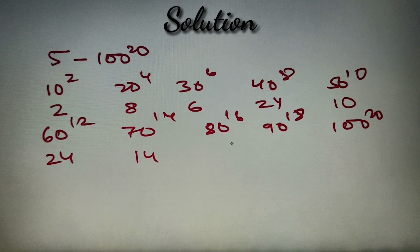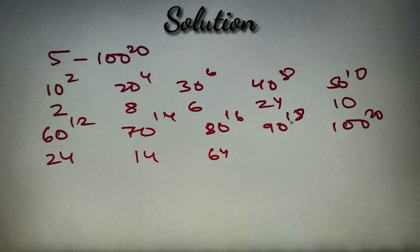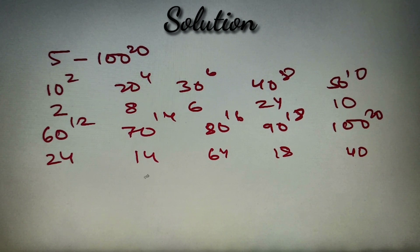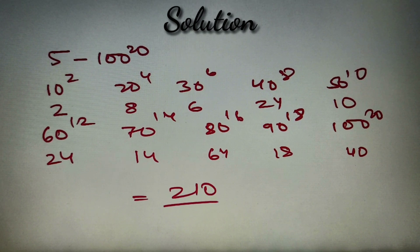For 70 raised to power 14, we get 14 powers of 2. For 80 raised to power 16, we have 64 powers of 2 — because 80 contains 2 raised to power 4, so 4 times 16 equals 64. For 90 raised to power 18, we have 18 powers of 2, and for 100 raised to power 20 we have 40 powers of 2. Summing these: 2 plus 8 plus 6 plus 24 plus 10 plus 24 plus 14 plus 64 plus 18 plus 40 equals 210. So the highest power of 2 in the numerator is 210.